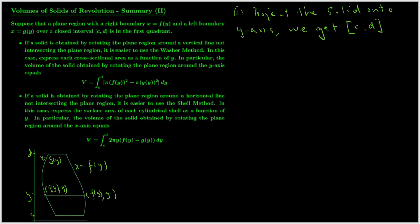Alternatively, you can think: what is the smallest possible value of y, and what is the largest possible value of y for all the points in the solid or on the plane region? In step two, we need to get the area of the cross section for every y in between c and d on the interval from c to d. Before we get to the area of the cross section, we need to imagine the shape of the cross section.